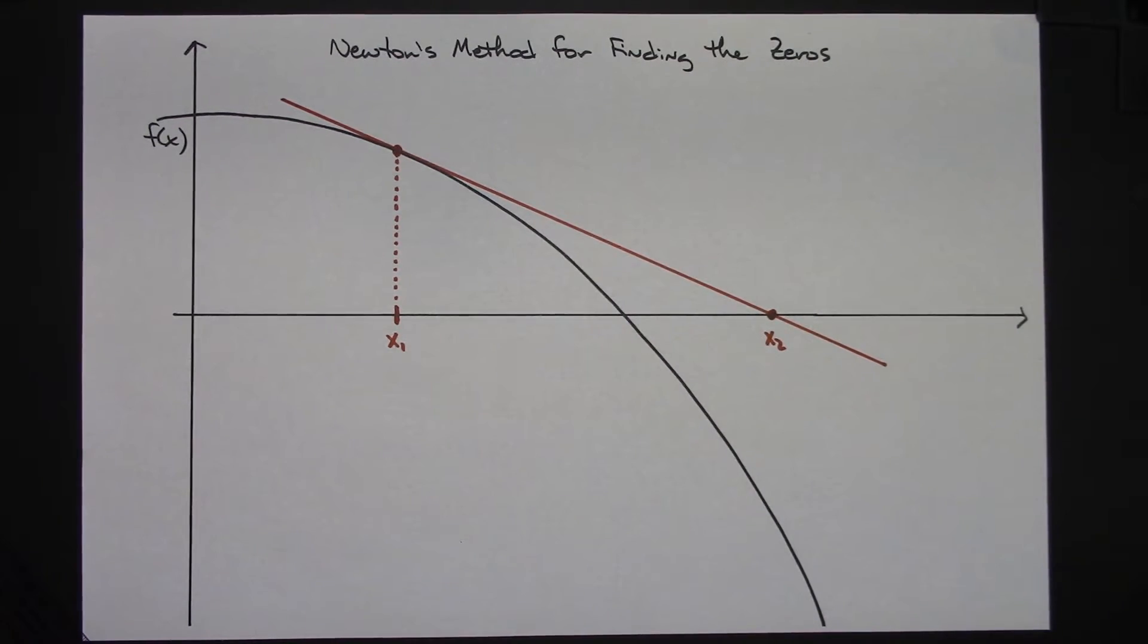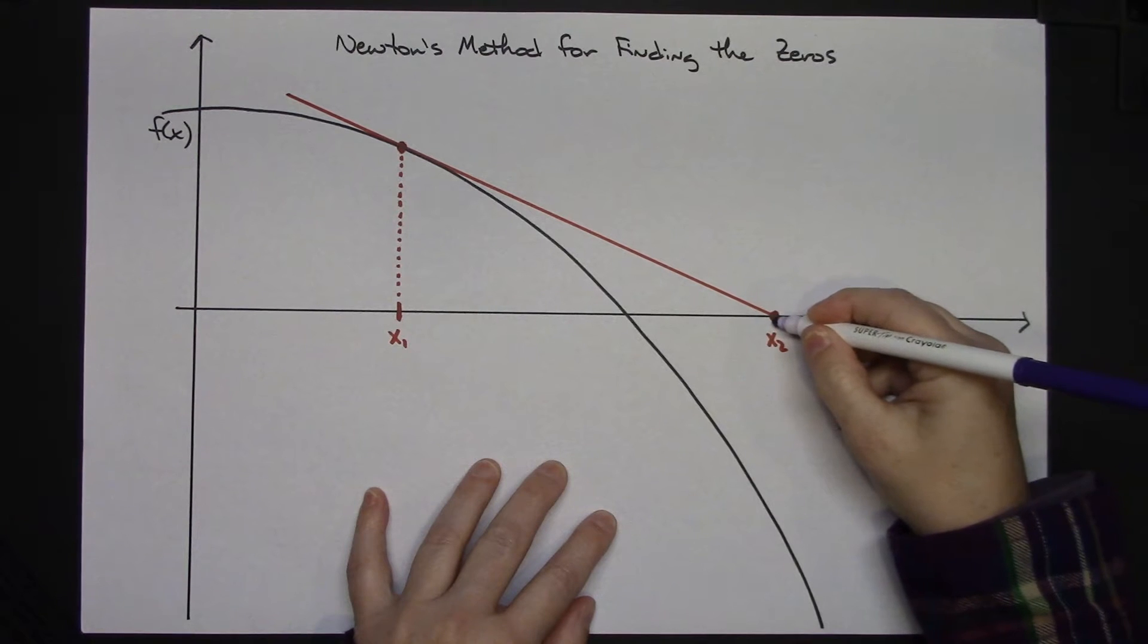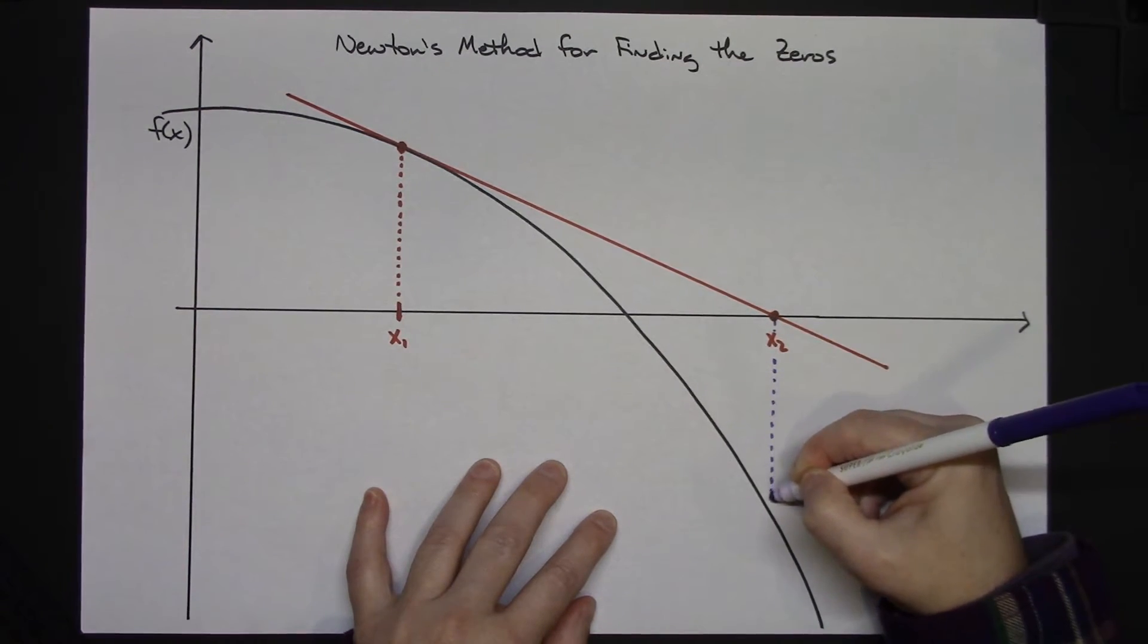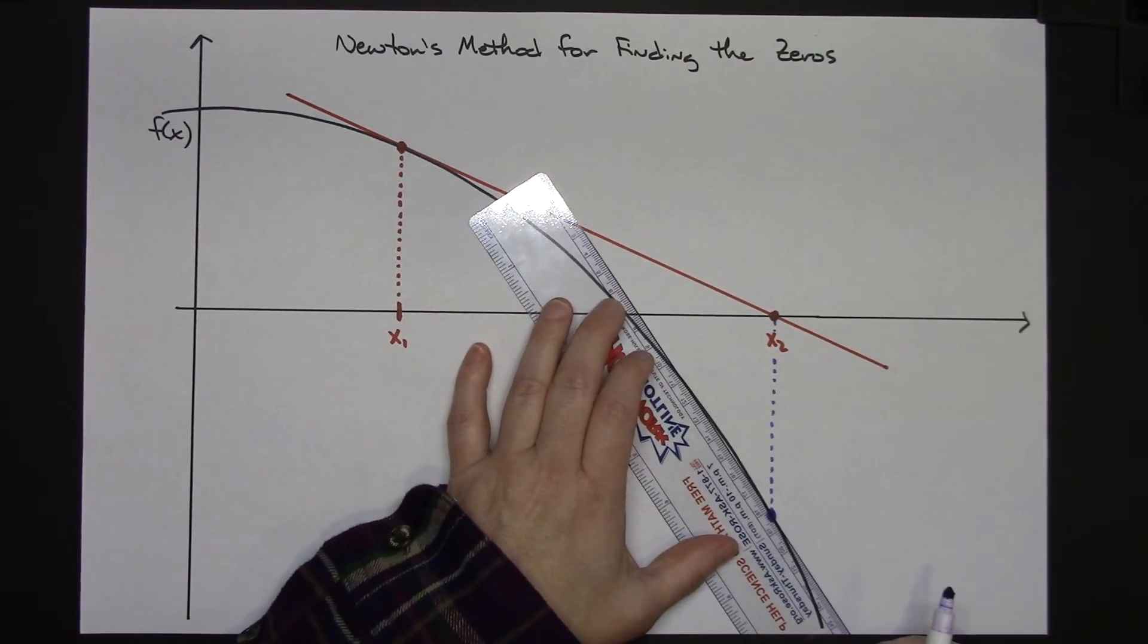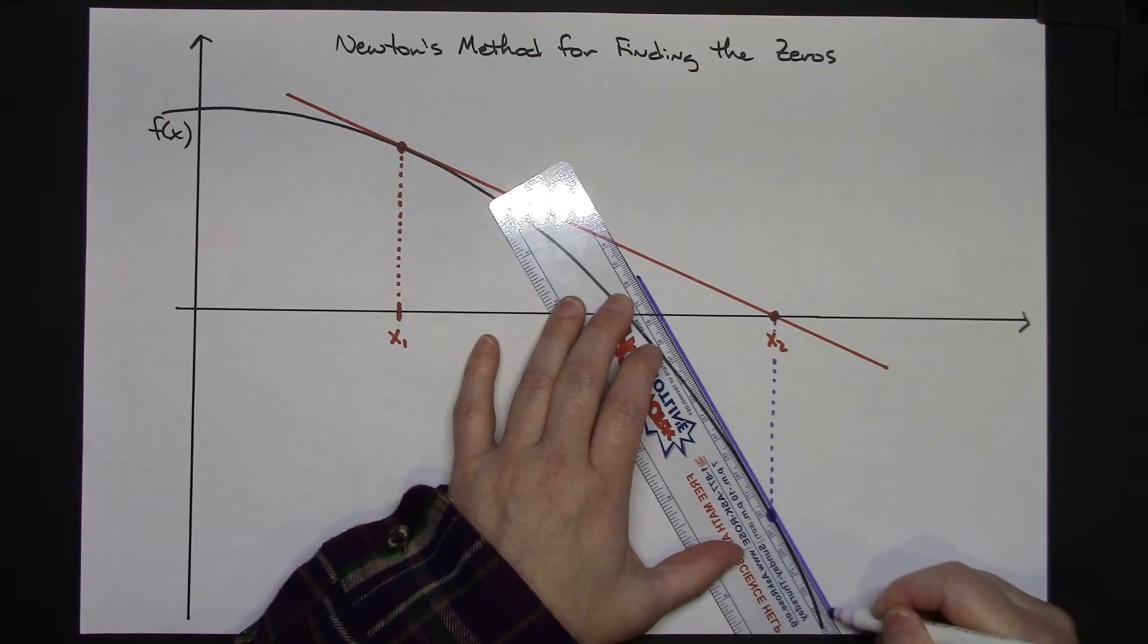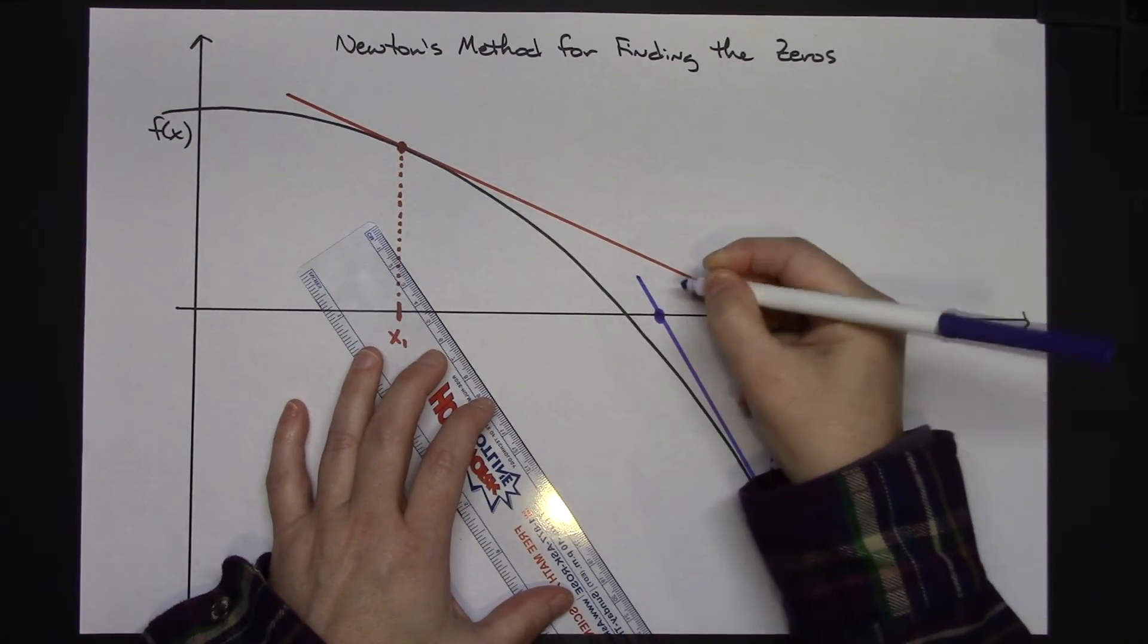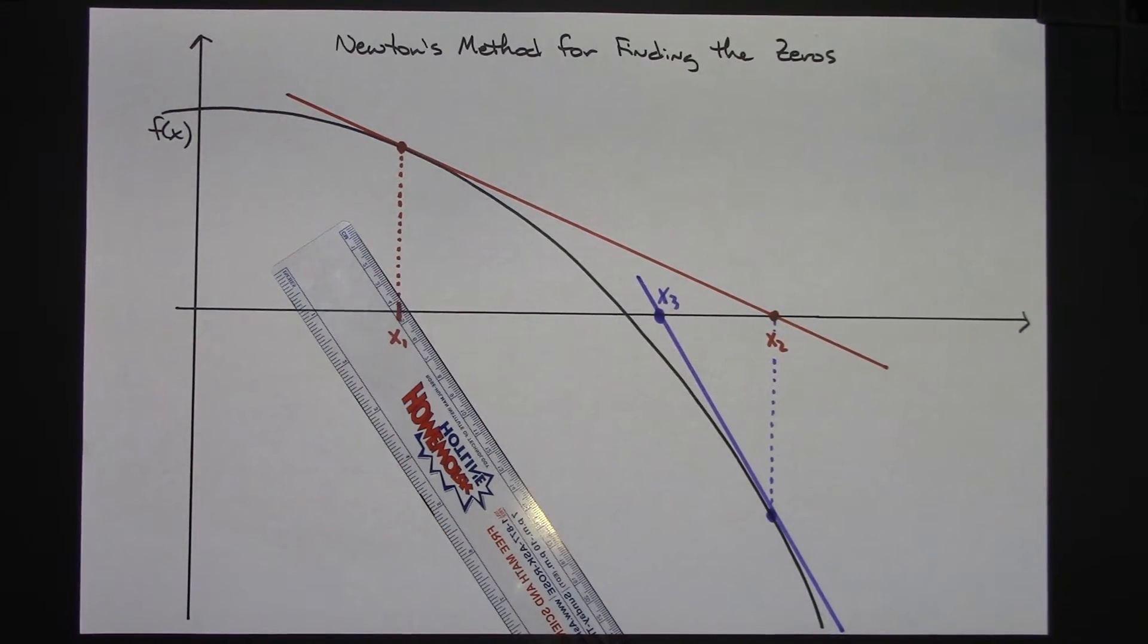If the process is repeated, here is now my better approximation. I draw a vertical line to the curve, and then at that point along the curve I draw a tangent and again I make sure that tangent line crosses the x-axis. So there is my third approximation and it is even closer to that zero.